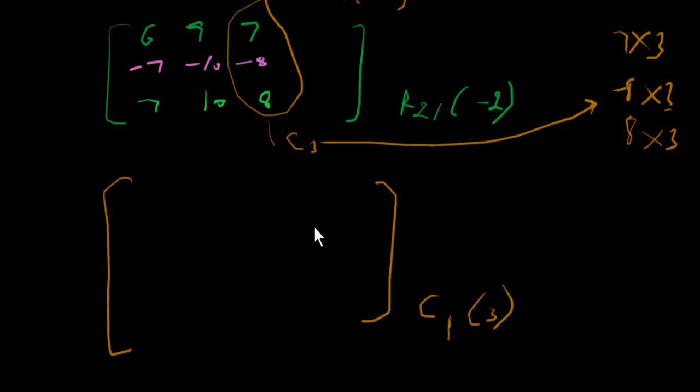Just this will change: 7 into 3 is 21, 8 into 3 is minus 24, and 8 into 3 is 24. Rest will be the same.